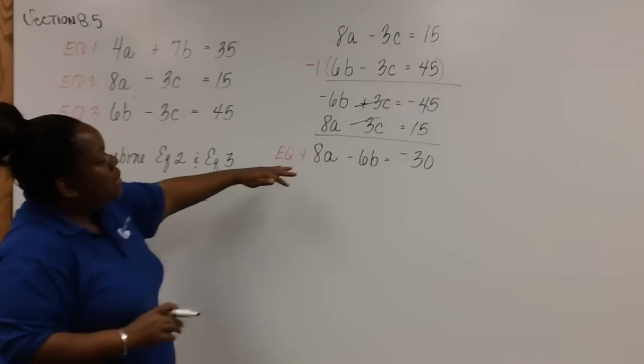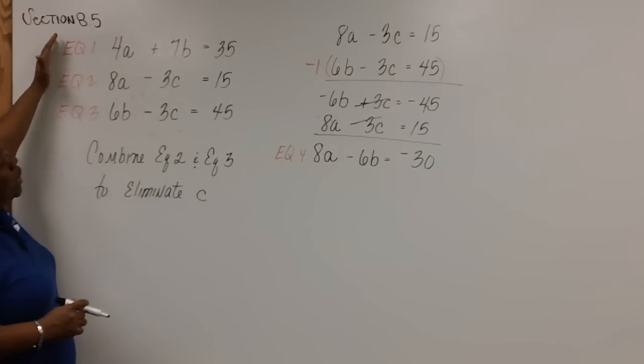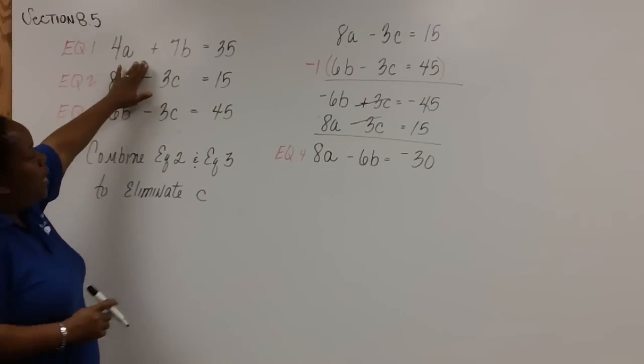Now, because this equation four has the variables A and B, we can combine that with equation one, which also has A and B.